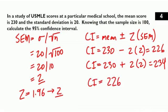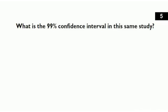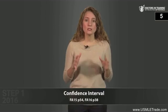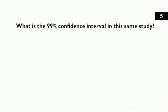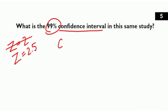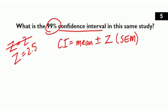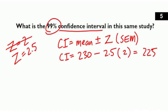The next two questions relate to the previous study. What is the 99% confidence interval? Using the same standard error of the mean of 2 and mean of 230, but now for a 99% CI, we use Z = 2.5. So: 230 minus 2 times 2.5 equals 230 minus 5, which is 225. And 230 plus 2 times 2.5 equals 230 plus 5, which is 235. The 99% confidence interval is 225 to 235 — as confidence level increases, the interval widens.